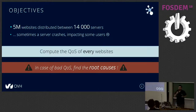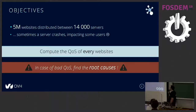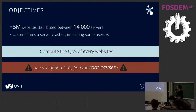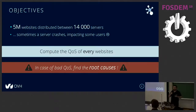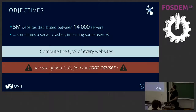Anthony and I are Python developers in the web hosting team of OVH, a French cloud provider. Our team manages around 5 million websites, which are distributed between around 14,000 servers. Most of the time everything is okay, but sometimes we can have a crash of one or more services. Even with load-balancing systems, some users can be impacted. So the objective of the project is simple: we need to compute the QoS of every one of those 5 million websites.